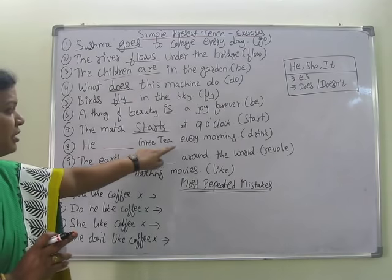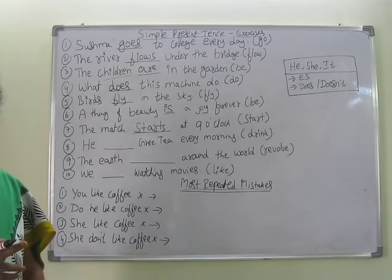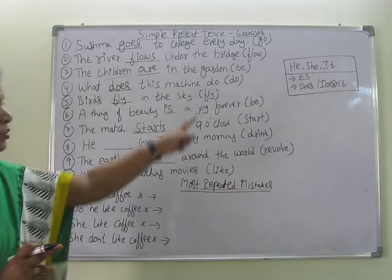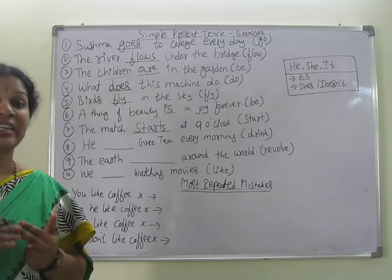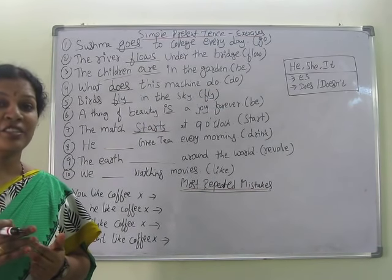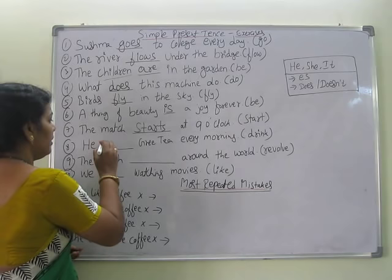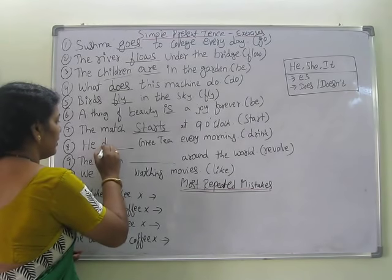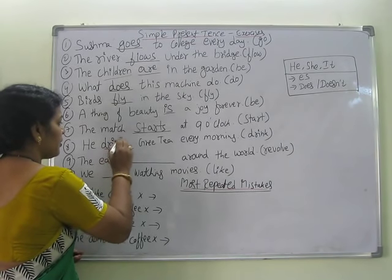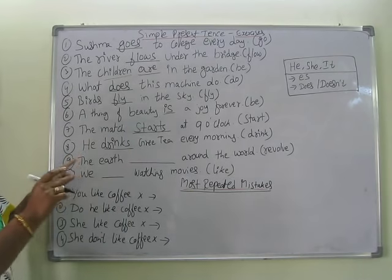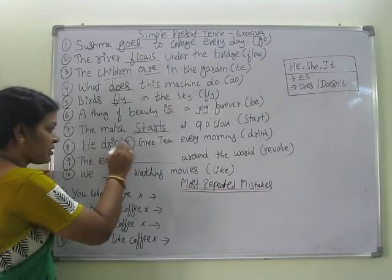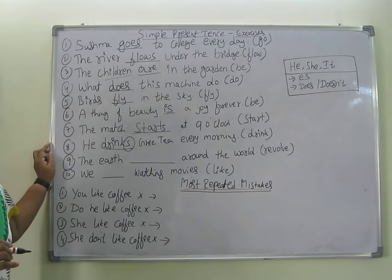He ___ green tea every morning. 'Drink' is given. We already said: whenever he, she, or it comes, you add 's'. So: He drinks green tea every morning. Whenever he, she, or it is the subject, we use 'drinks', 'she drinks', 'he drinks' — like this.